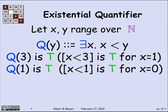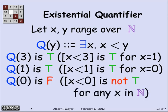What about Q of 1? Well, again, there's an x that's a non-negative integer, namely 0, that's less than 1. And therefore, Q of 1 is true. On the other hand, Q of 0 is false, because there is no non-negative integer that's less than 0. And so there's no value that you can assign to x that's a non-negative integer that will make it less than 0. That one's not so bad, I hope.